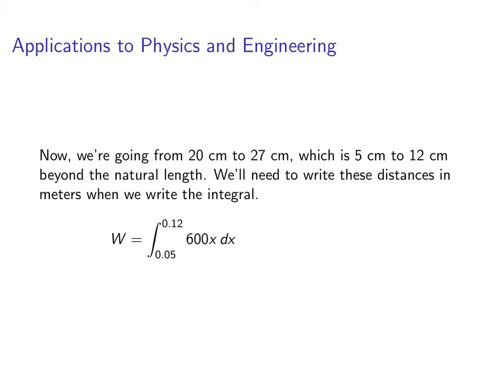So our work is going to be equal to the integral from 0.05 to 0.12 of 600x dx. The 600 was the k that we solved for previously. And then the 0.05 to the 0.12, those are the distances from the natural length. So we're going from 5 centimeters to 12 centimeters beyond the natural length.